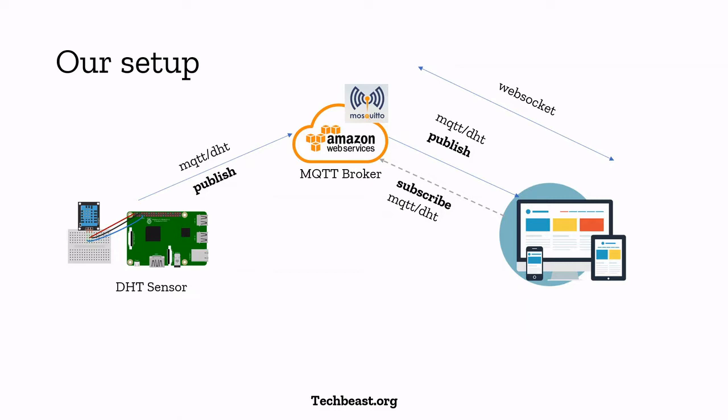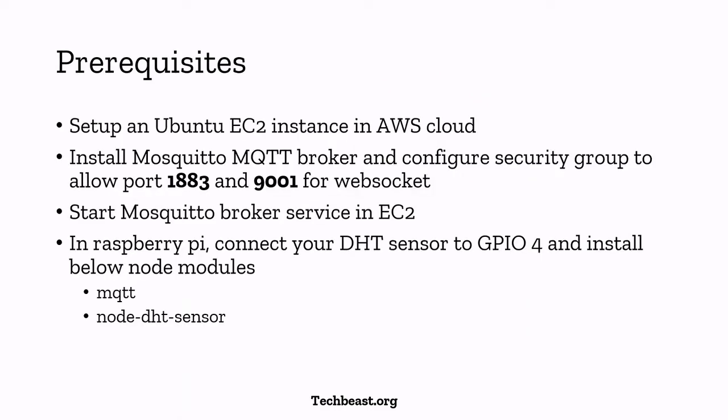The prerequisites are: setting up an Ubuntu EC2 instance in AWS, installing the Mosquitto MQTT broker, and configuring the security group to allow port 1883 for MQTT TCP and port 9001 for WebSocket. In EC2, you need to explicitly allow specific ports to be accessible over the internet. Then we will start the Mosquitto broker service in EC2, set up the Raspberry Pi, connect the DHT sensor, and run a simple Node.js application to publish the sensor data to the broker using the mqtt and node-dht-sensor modules.